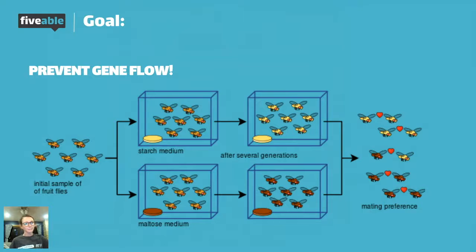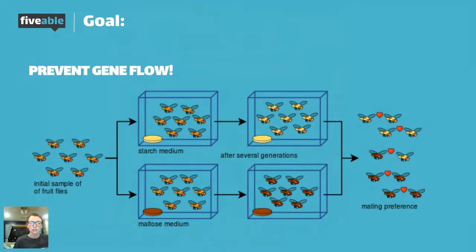And I can use this picture as an example — this is a really great example of speciation, specifically sympatric speciation, where flies are basically trained on two different mediums, two different foods that they're eating. One group of flies is eating maltose and the other is eating starch, so different carbohydrate sources.